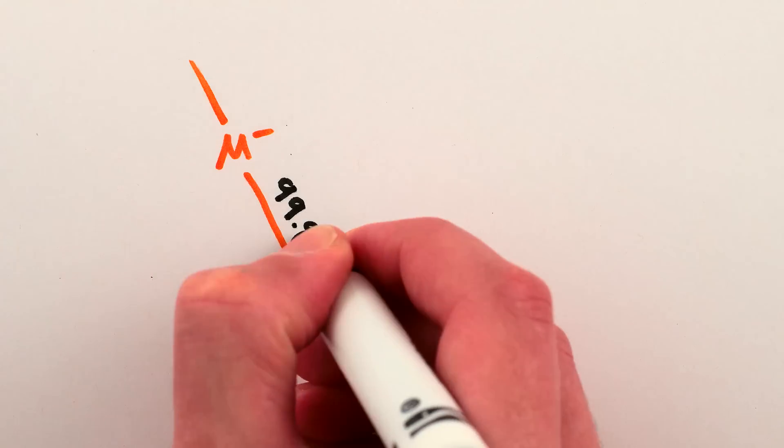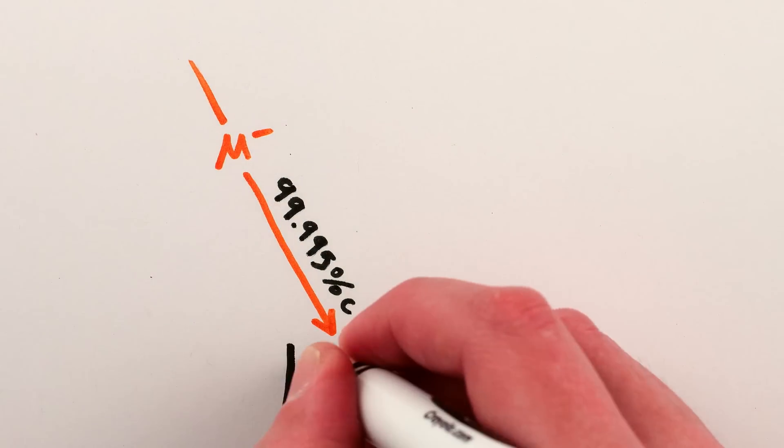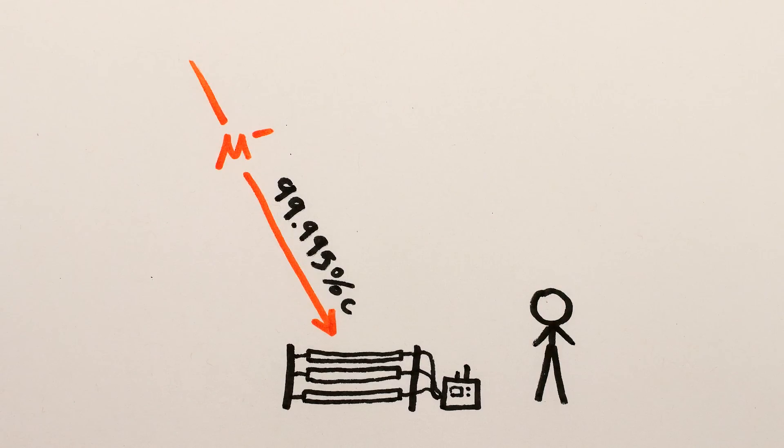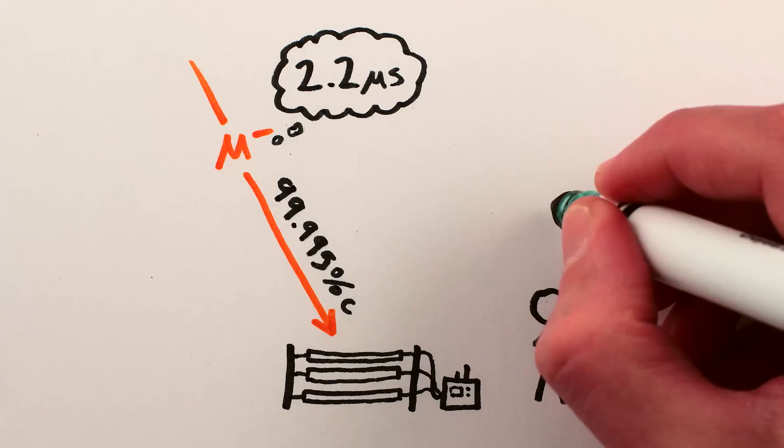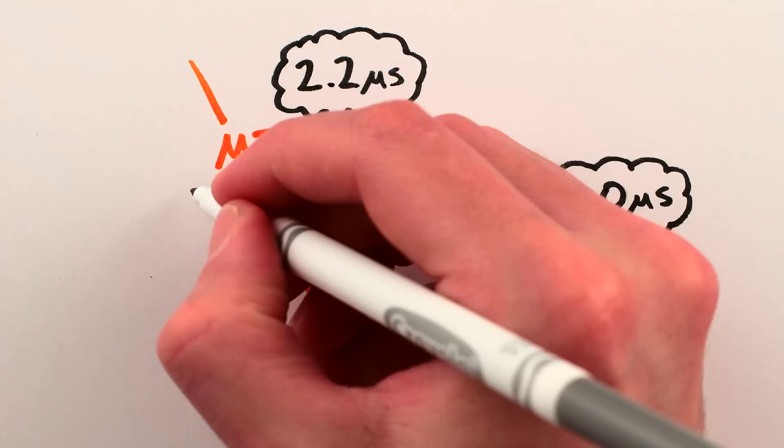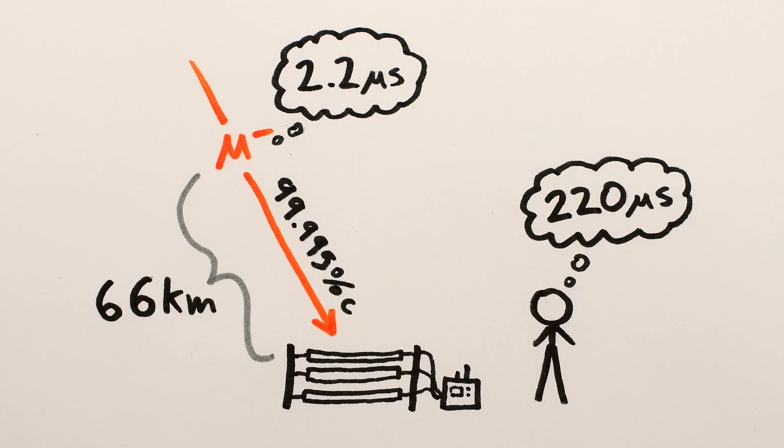And even higher energy muons going even faster would even more easily reach our detectors on the Earth's surface before they decayed. At 99.995% the speed of light, the average muon would live for 220 microseconds and travel at least 66 kilometers before decaying.